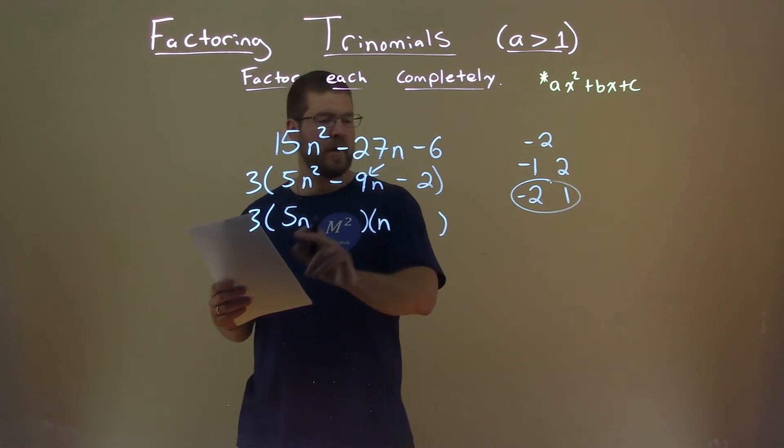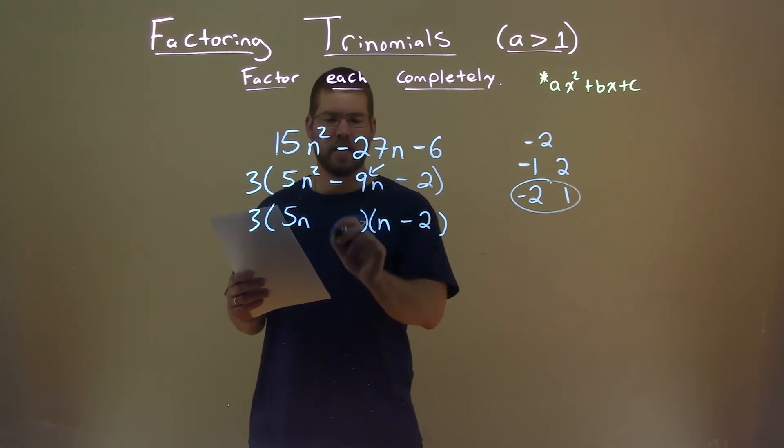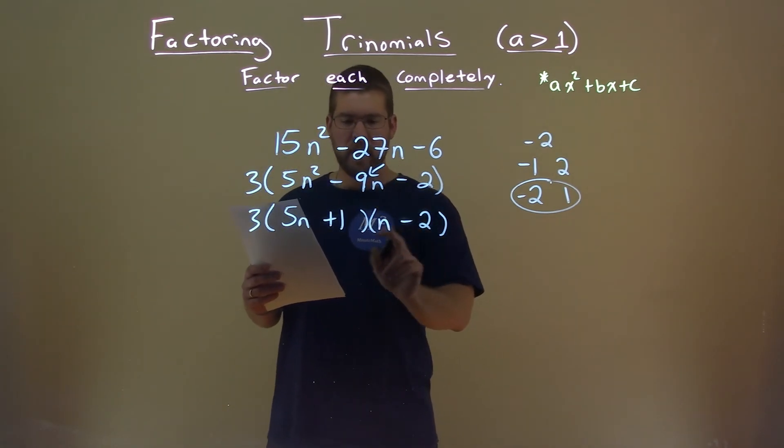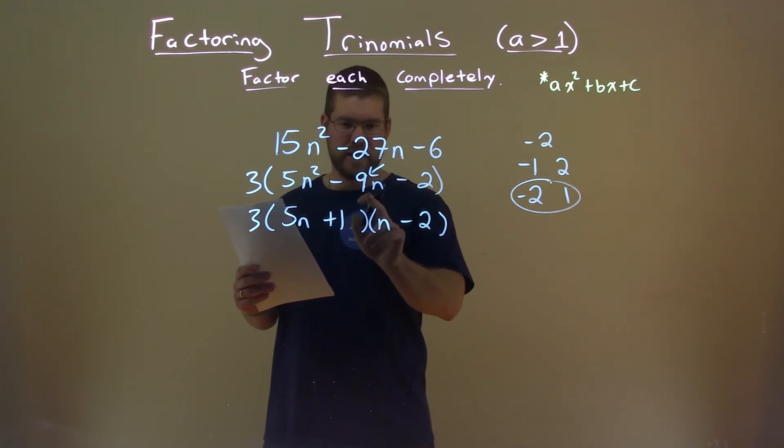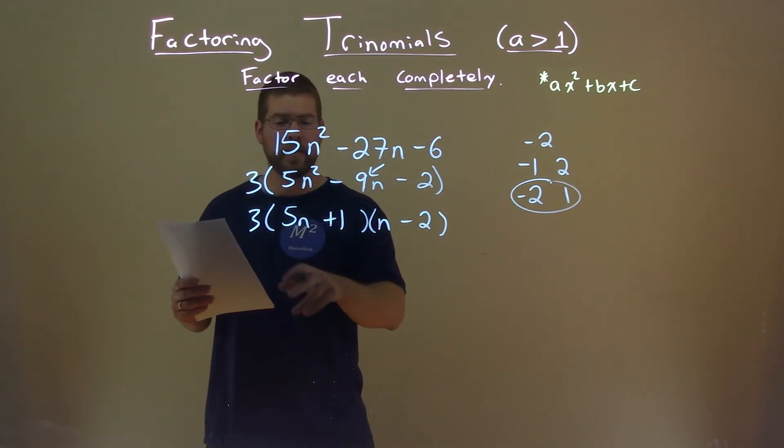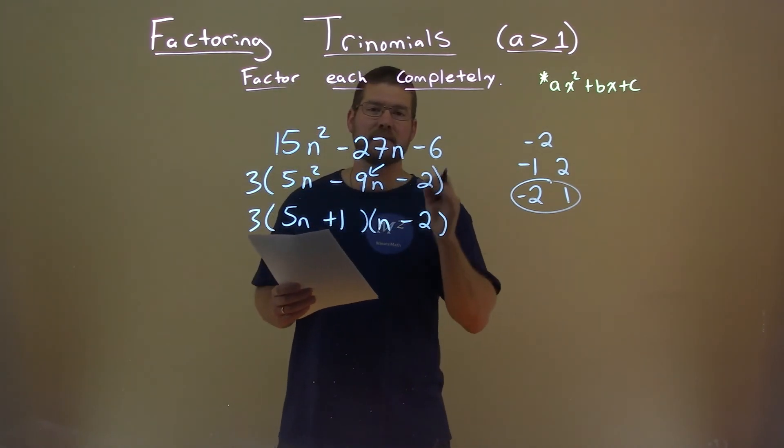So opposite of where the 5n is, we put a minus 2 here and a positive 1. And we can see 5n times a negative 2 is negative 10n, plus 1 times n is negative 9n. And there we have our final answer. Don't forget the 3. 3 times 5n plus 1 times n minus 2.